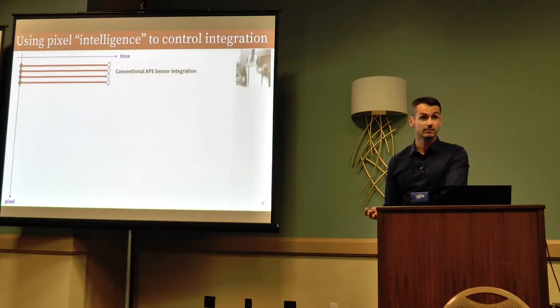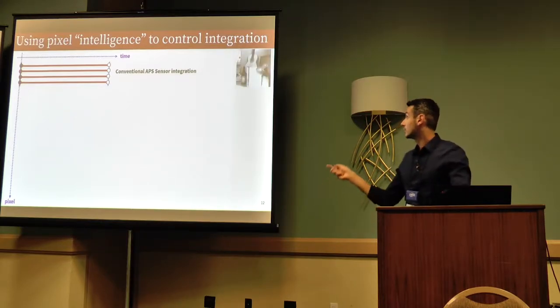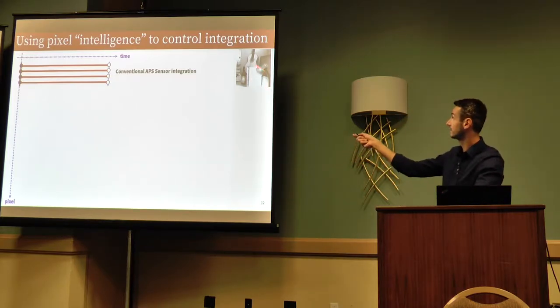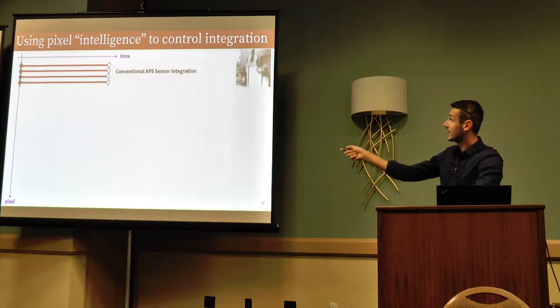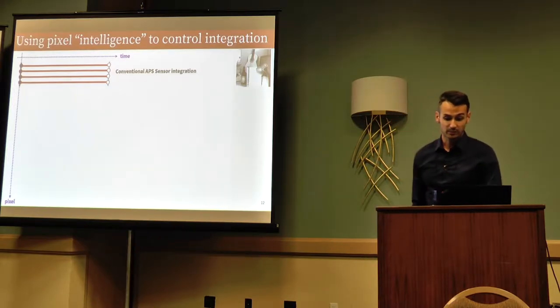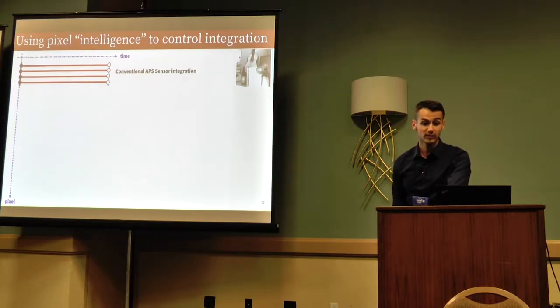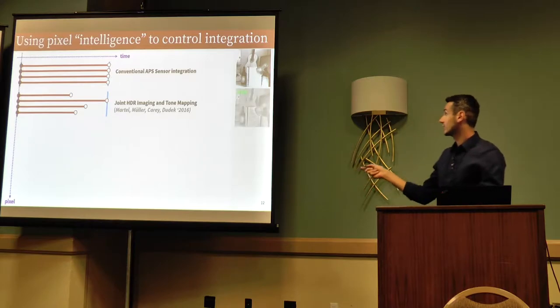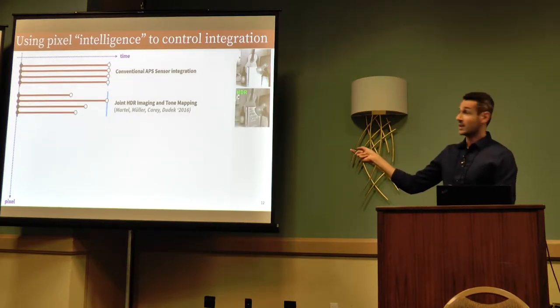Stop integrating all my pixels simultaneously, and reading out all synchronously. If you do that, it's a valid way to sense, you get a conventional image, which also means that in places where the radiance is very high, the pixels that have integrated might have saturated. So, you get overexposure. The first thing you might want to do with this intelligence is to say certain pixels might want to stop integrating earlier. And as a natural side effect, you get HDR.